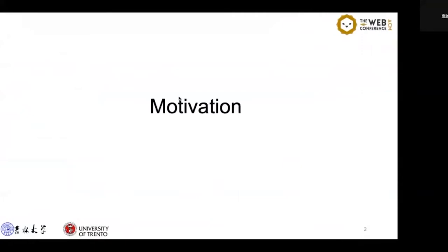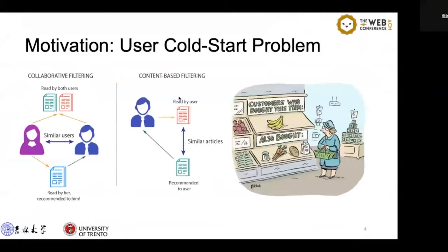First is the motivation. To alleviate the information overload problem, recommender systems predict items that may be relevant to users by discovering their personalized preferences. Such better-performing recommendation models require a large amount of user interactions for training.